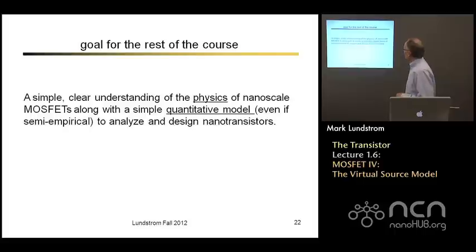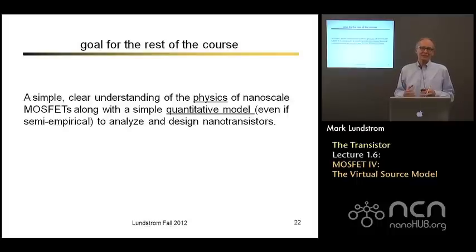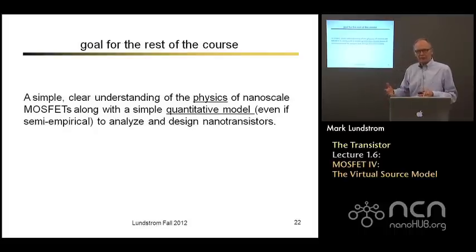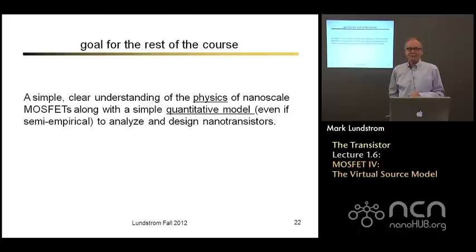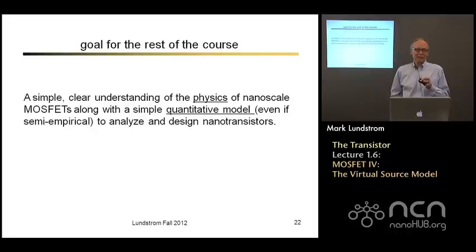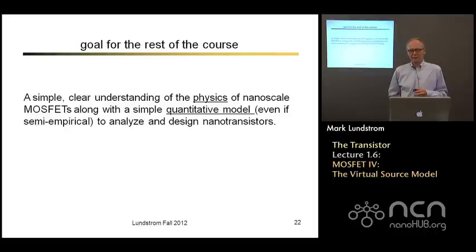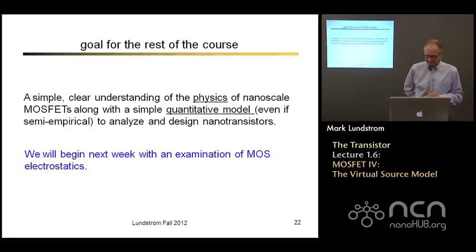The goal for the rest of the course is to talk about the physics — to go beyond the 1960s, 70s, and early 80s physics and talk about physics appropriate for these very small devices. We want to take this virtual source model and help evolve it into something that is very physical, sound, and applicable to modern transistors. The next task we need to address is to have a clear understanding of MOS electrostatics, because the most important thing about a transistor is manipulating energy barriers. Once we understand MOS electrostatics, we'll look at ballistic and quasi-ballistic transport. Thank you, and we'll continue with MOS electrostatics in the next lecture.